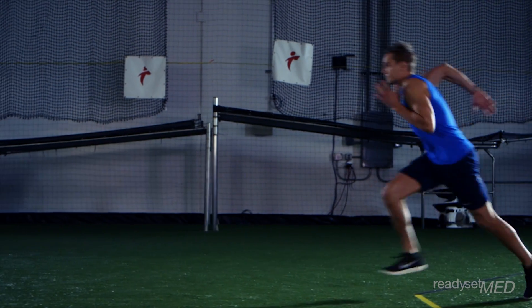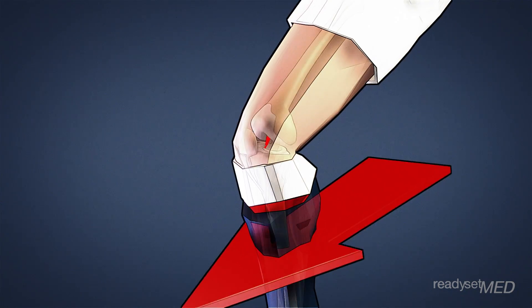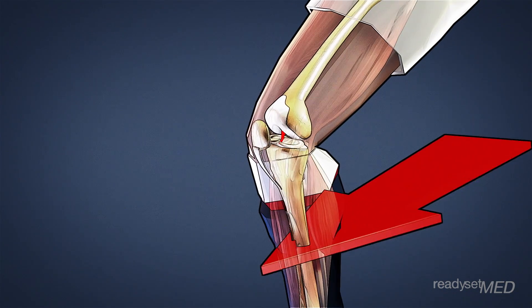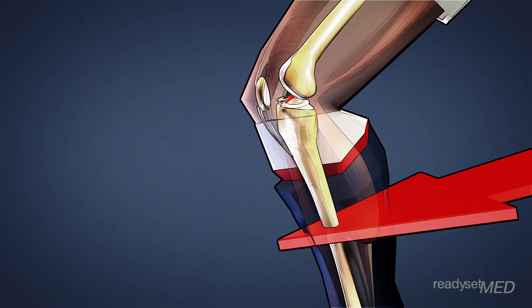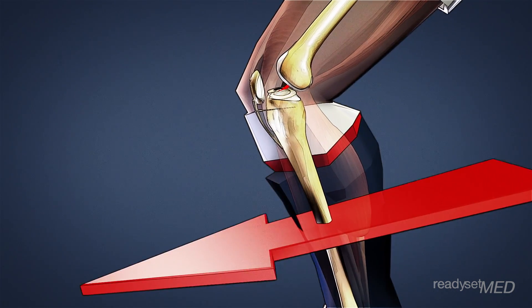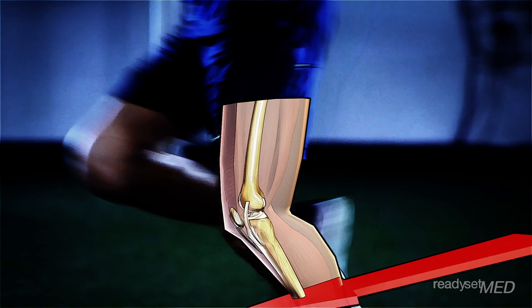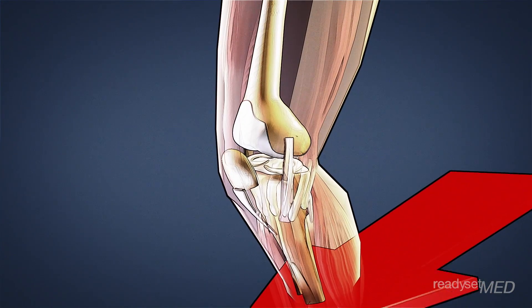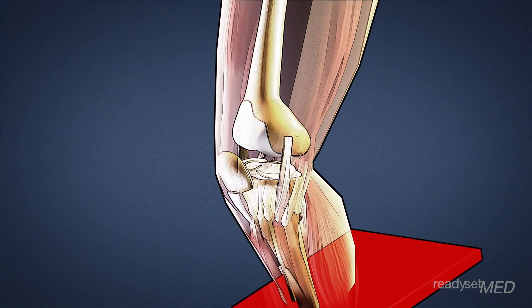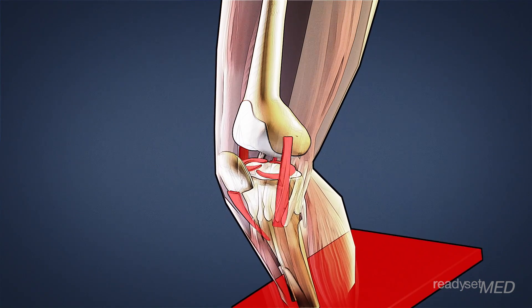Here's how the ACL functions when you run. When your leg is on the ground and you're bearing weight, the tibia moves forward on the femur, then returns back to neutral when your leg is off the ground. An intact ACL will help keep the forward shift of the tibia in check during your stride. When your ACL is injured, the tibia will move too far forward, which puts stress on the secondary stabilizers of the knee.